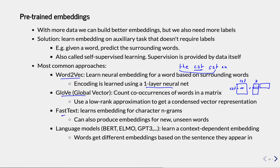FastText is similar to Word2Vec but works on character n-grams instead. We don't learn an embedding for the word 'cat' directly, but we learn an embedding for small parts of words like 'ca', 'at', and so on. After learning embeddings for all these n-grams, we can combine them to produce embeddings for new words we've never seen before.